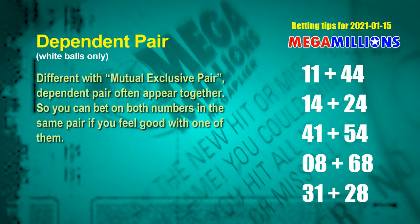Some numbers are mutually exclusive, but others are dependent. In a dependent pair, you can bet on both because they often appear together in winning numbers of a draw. The white ball dependent pairs for next draw are: 11 & 44, 14 & 24, 41 & 54, 08 & 68, and 31 & 28.